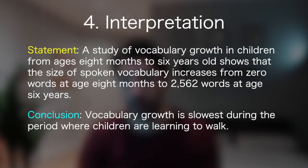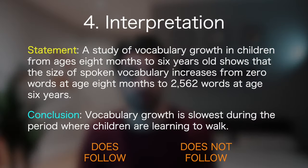Another conclusion might be: vocabulary growth is slowest during the period when children are learning to walk. Whether you know anything about when children learn to walk, just imagine you know none of that — the only information you have is what's given in the paragraph. Here, the paragraph doesn't tell you anything about when children start to walk and what the vocabulary growth is at that stage. So here you would choose that it doesn't follow, because you can't make an argument that it does follow beyond a reasonable doubt.